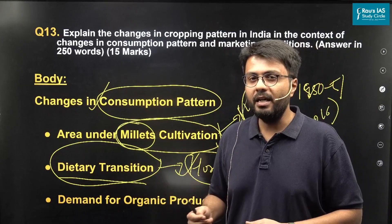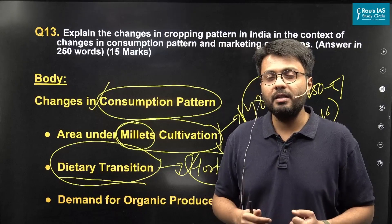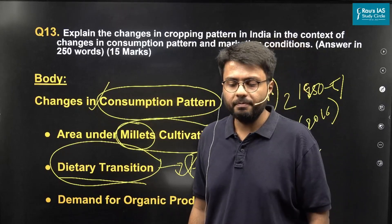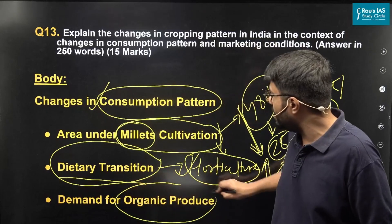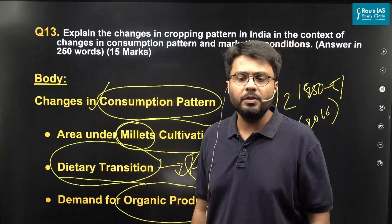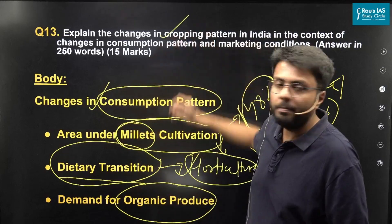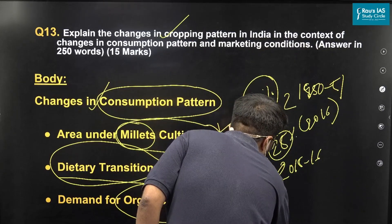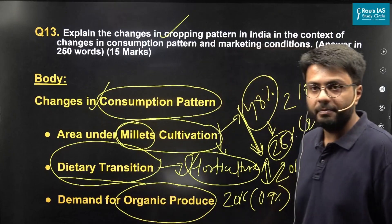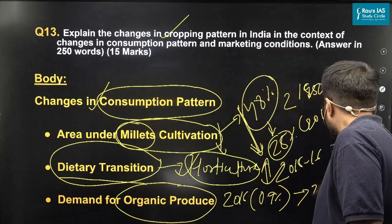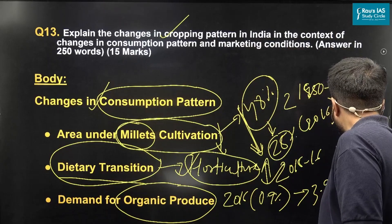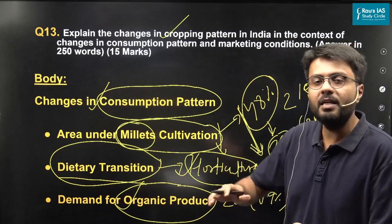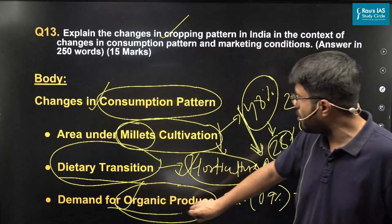Increasing demand for health-centric foods and rising awareness about the negative effects of chemical fertilizers have made people more aware of organic products. Hence, the demand for organic products in India has increased in the last few years. For example, organic products were grown on 0.9% of total area in 2016, whereas this figure increased to 3.9% in 2023. Therefore, due to increased demand for organic produce, we can see a change in cropping pattern towards cultivation of organic produces.